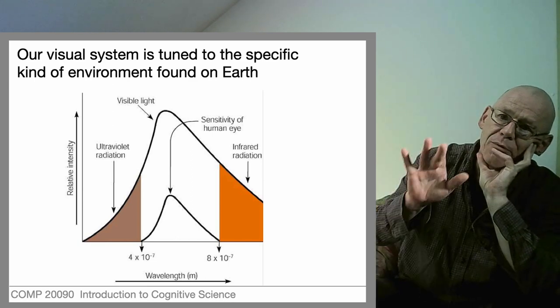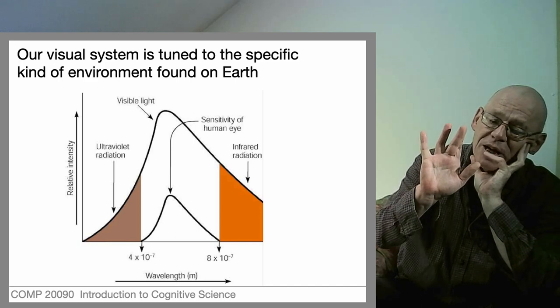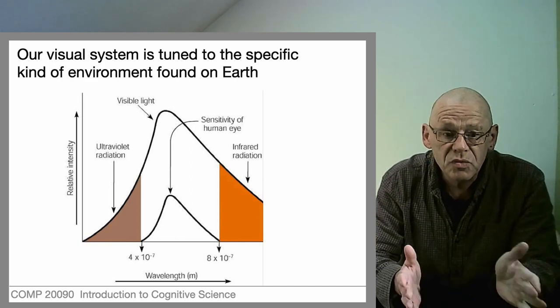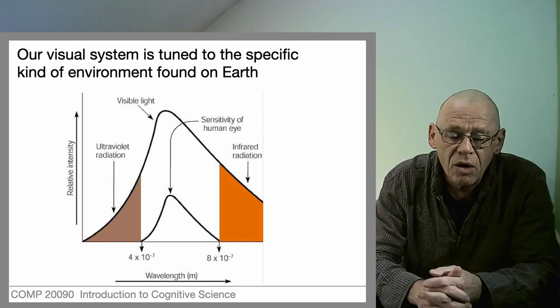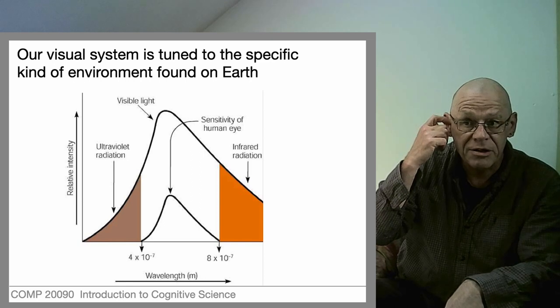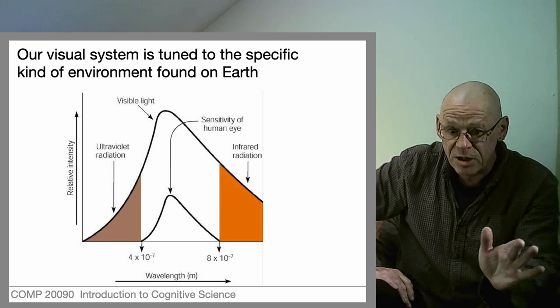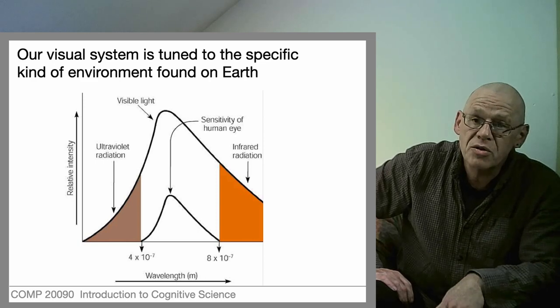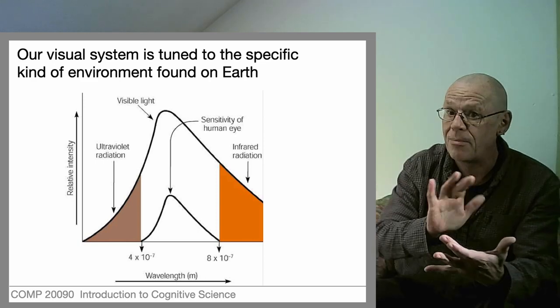Some frequencies are very well represented and others less so. You see two graphs there - one shows the profile of electromagnetic radiation coming from this particular star, our Sun, and the lower one shows the sensitivity of the human eye. You can see that they match pretty exactly.